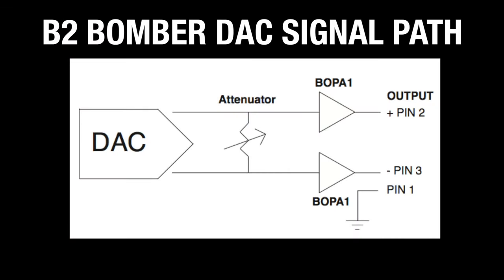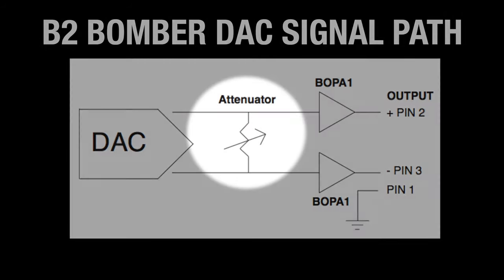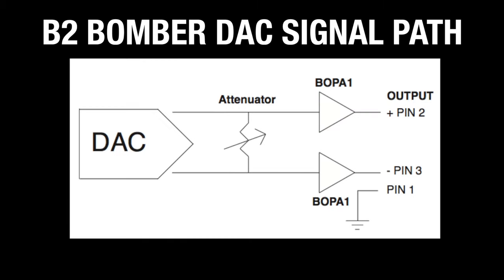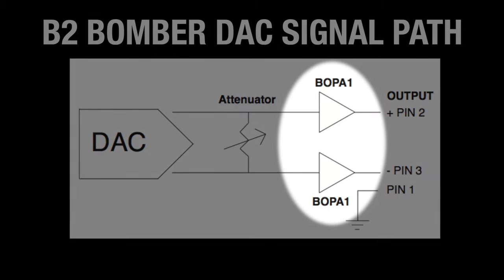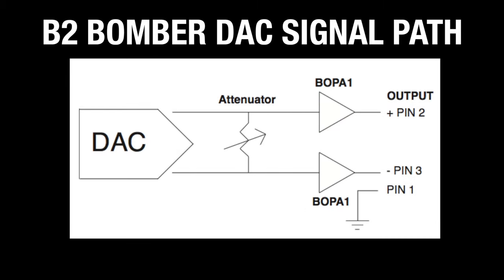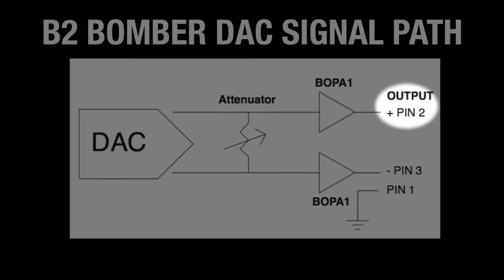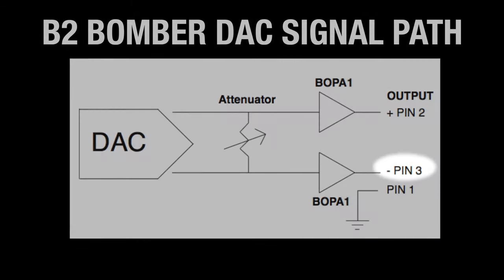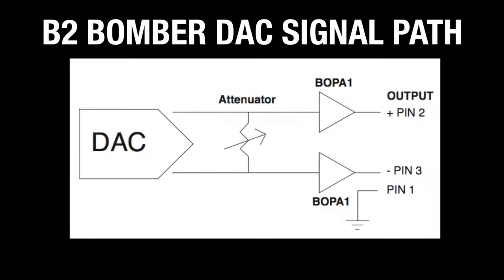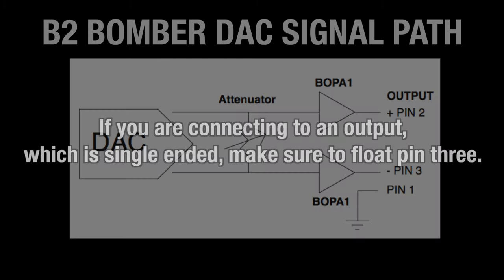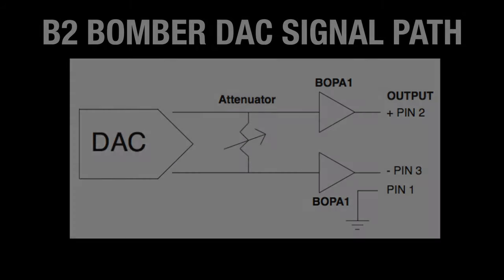Figure 2 shows the basic B-2 Bomber DAC signal path. We start with the DAC chip, which feeds into the attenuator, followed by the BOP-A1s, our proprietary class A op amp. On the output, pin 2 is hot, pin 3 is cold, and pin 1 is ground. If you are connecting to a single-ended output, make sure to float pin 3.